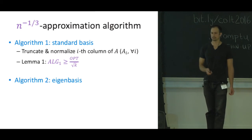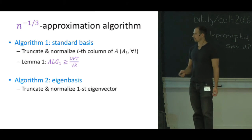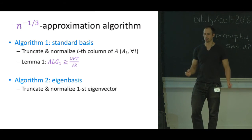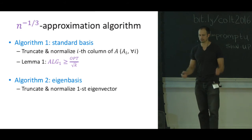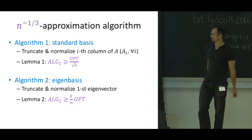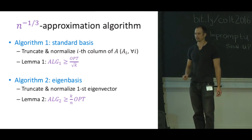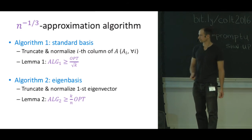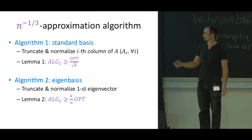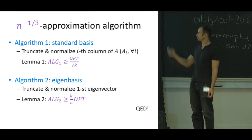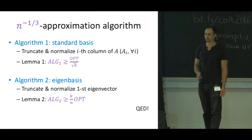Algorithm two is simply looking at the eigenbasis. You just take the largest eigenvector, the eigenvector with largest eigenvalue. This gives you a k over n approximation. Now if you take the worst case k, that's n to the 2/3, and this is an n to the minus 1/3 approximation algorithm. That's it.